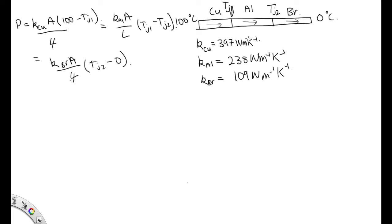Now let's cancel out our common factors. We'll get rid of the P. Cancel out the A's and the L's in each case. So we've got K for copper, 100 minus TJ1, is equal to K for aluminum, TJ1 minus TJ2, is equal to K for brass times TJ2. Now we've got three equations and two unknowns, so we need to solve it simultaneously.